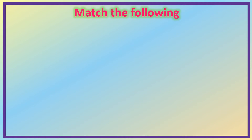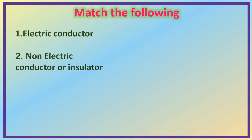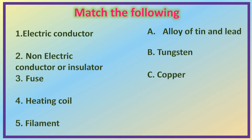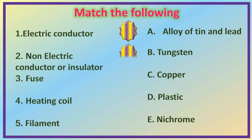Here is also an interesting matching. Follow me. First: electric conductor. Second: non-electric conductor. Third: fuse. Fourth: heating coil. Fifth: filament. The options are — A: Alloy of tin and lead, B: Tungsten, C: Copper, D: Plastic, E: Nichrome.